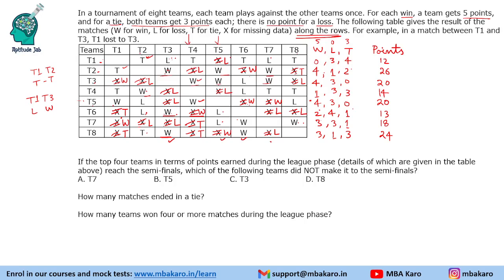The first question: if the top 4 teams reach the semi-finals, which teams qualify? The top 4 by points are Team 2 (26), Team 8 (24), Team 3 or 5 (20 each), and Team 5. So Teams 2, 3, 5, and 8 make the semi-finals. Team 7 does not make the semi-finals.